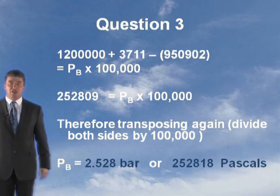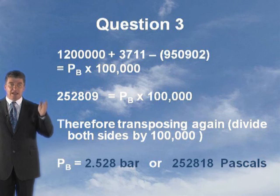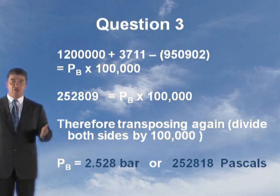That's what the question was asking you. What is the pressure at B? It's 2.528 bar or 252,818 pascals. That is how you solve questions like that. And that completes question three.